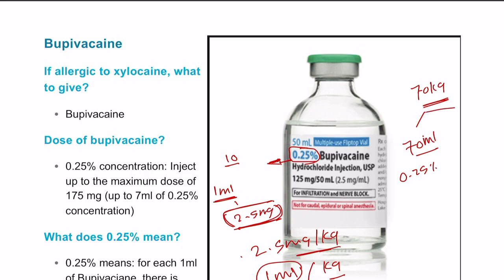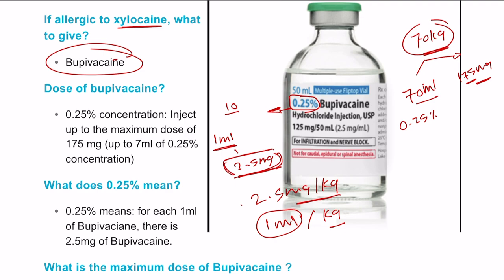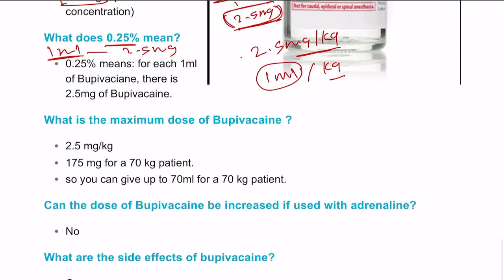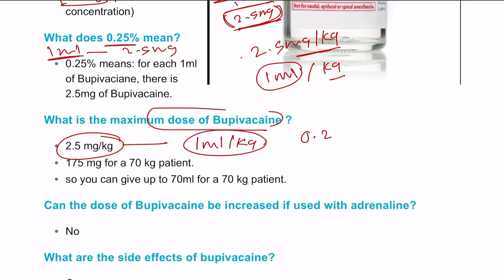2.5 mg per kg means 1 ml per kg of the 0.25% concentration. So for a 70 kg patient, you can give up to 70 ml of the 0.25%, or expressed in milligrams: 70 multiplied by 2.5 equals 175 mg of bupivacaine. If the patient is allergic to lidocaine, you can give bupivacaine. The maximum is 175 mg, or 70 ml of the 0.25%. Can the dose of bupivacaine increase with adrenaline? No — adrenaline doesn't affect bupivacaine, so we can't increase the dose.